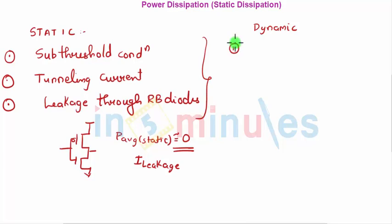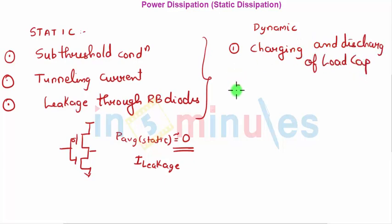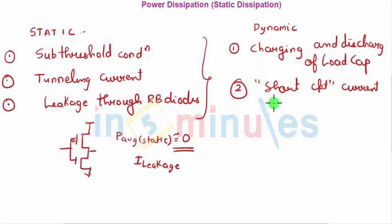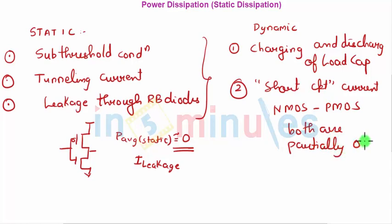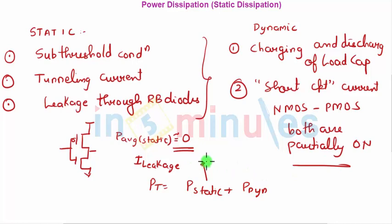Dynamic power dissipation has two components: switching power, which is the charging and discharging of the load capacitor, and short-circuit current, which occurs when both pull-up and pull-down — NMOS and PMOS — are partially on simultaneously. Total power equals P_static plus P_dynamic. Dynamic power will be covered in the next clip; here we focus on P_static.